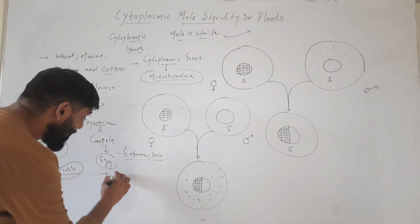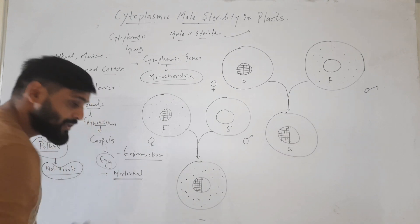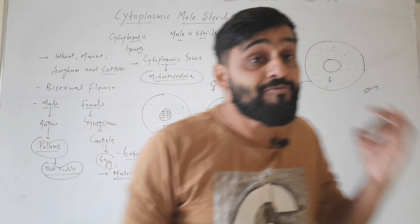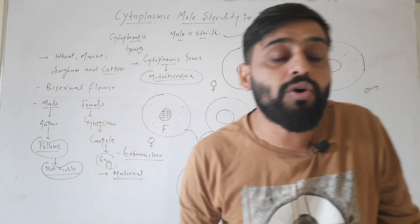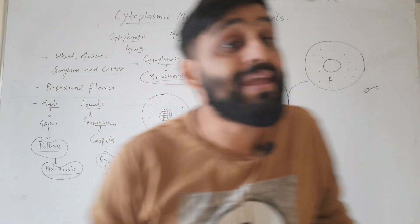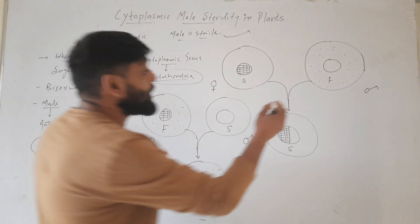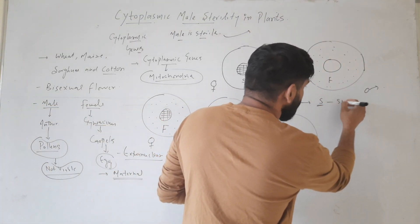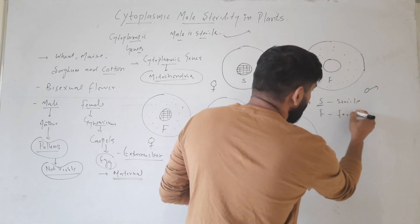There will be cytoplasmic inheritance, and this inheritance will be maternal also. Means the cytoplasm of the mother will decide whether the newly formed zygote will be male sterile or male fertile. According to this, we can see that there are two types of cytoplasm: one is S-type, that is sterile, and one is F-type, that is fertile.